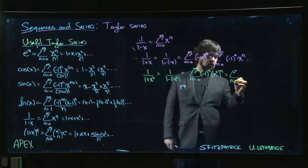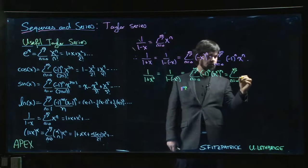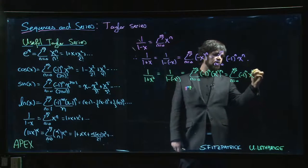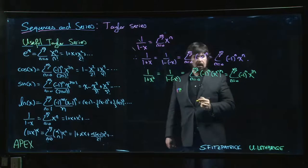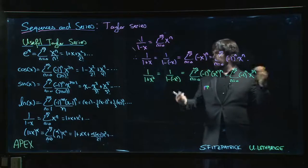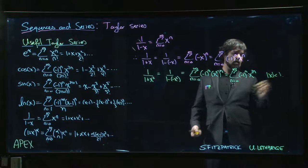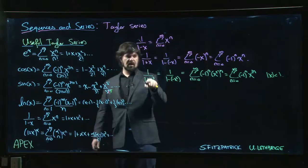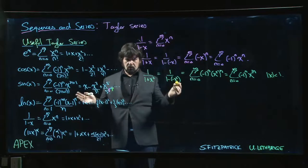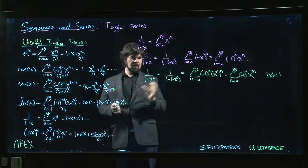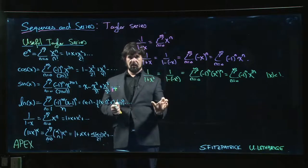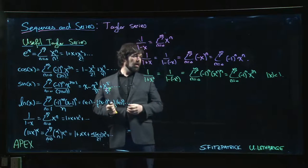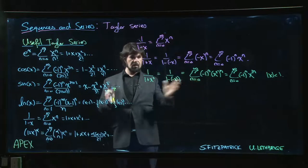Which is the sum n going from 0 to infinity of minus 1 to the n, x to the 2n. Again, we have to be careful. For all of this here, absolute value of x still has to be less than 1. The nice thing is, if you're replacing x by a power of x, the radius is going to stay the same. If x is less than 1, any power of x is still less than 1, which is good to know.